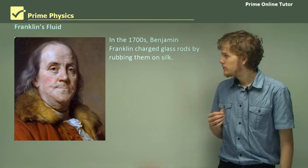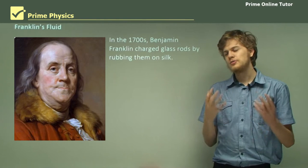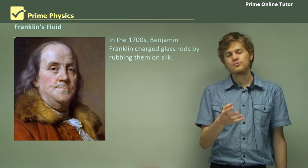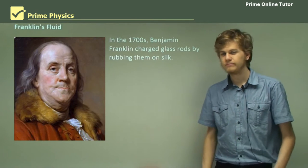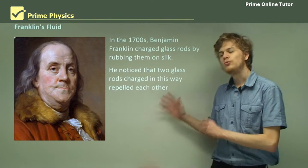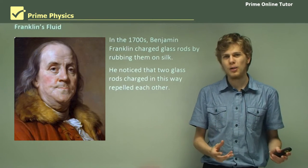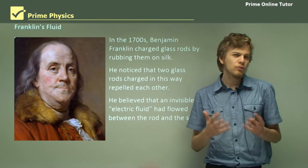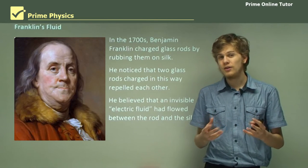Now in the 1700s, Benjamin Franklin was conducting experiments on electricity. He charged glass rods by rubbing them on silk, which gives the glass rod a positive charge and the silk a negative charge, because electrons move from the glass to the silk. He noticed that if he charged two glass rods like this, they would repel each other. He believed that there must be some sort of invisible electric fluid going from the glass rod into the silk, or maybe the other way — from the silk into the glass rod. Back then, it wasn't really possible to tell.